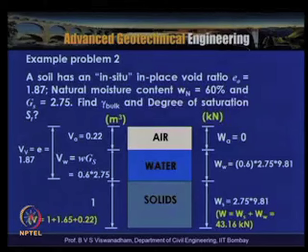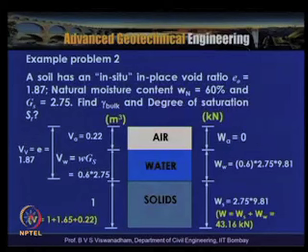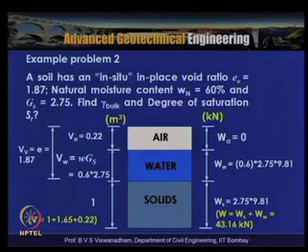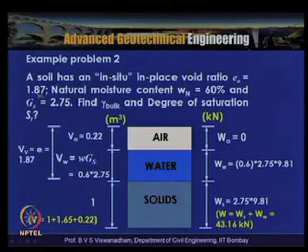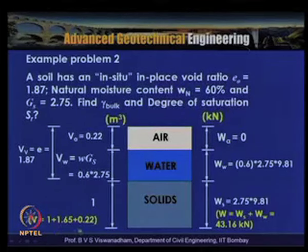Drawing the phase diagram — this is a partially saturated soil, so this is a three-phase diagram with air, water, and solids. We adopt the specific volume approach where volume of solids is set as 1 meter cube. With this, from the definition of void ratio (volume of voids to volume of solids = e₀ = 1.87), the volume of voids equals 1.87. So the total volume is 1 + 1.87 = 2.87 m³.